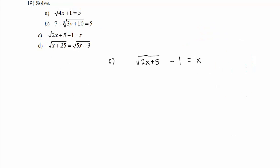Let's look at Part C. Again, your opening move for solving a radical equation is to isolate the radical expression. We can do that here by adding 1 to both sides of the equation.